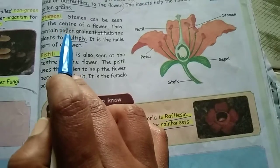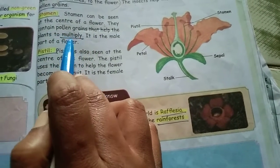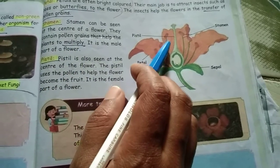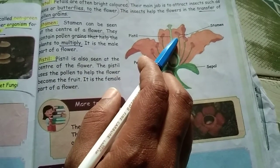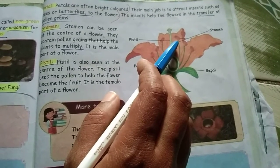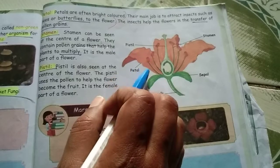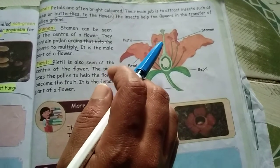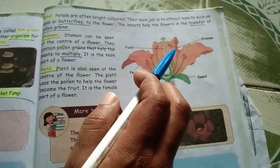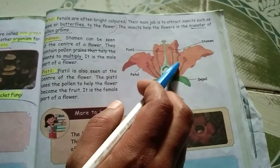The next part is the stamen, which can be seen in the center of the flower. It contains pollen grains that help the plant to multiply. The stamen is the male part of the flower. When insects sit on the flower, the pollen grains stick on their body or leg, and when the insect flies away, the pollen grains fall on the ground and a new plant will grow.